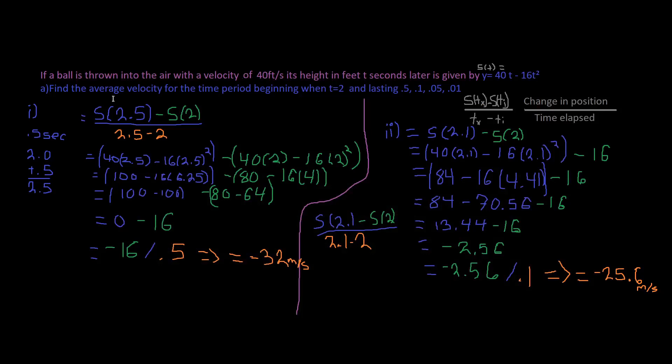If a ball is thrown into the air with a velocity of 40 feet per second, its height in feet t seconds later is given by y equals 40t minus 16t squared.